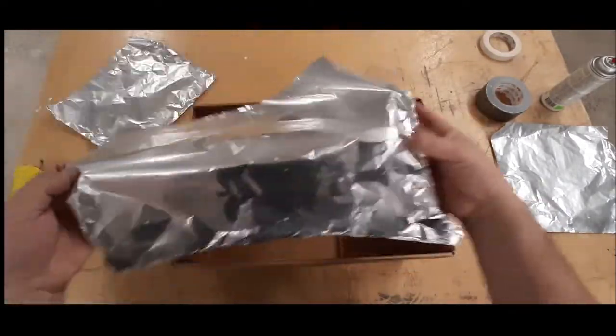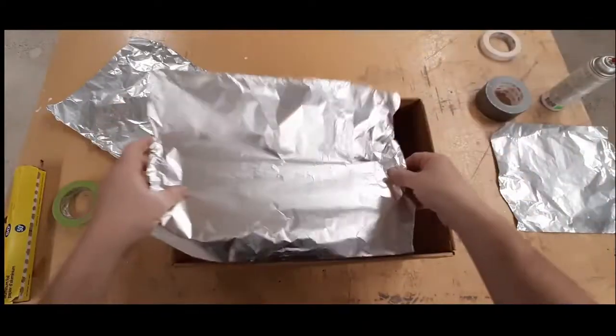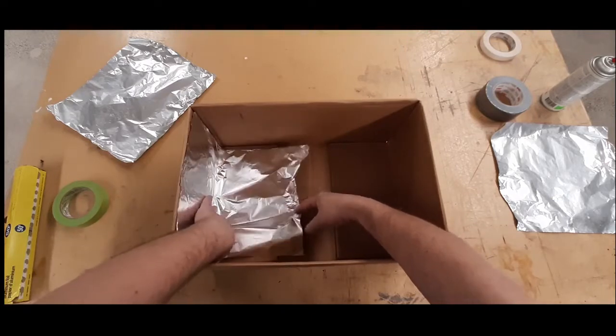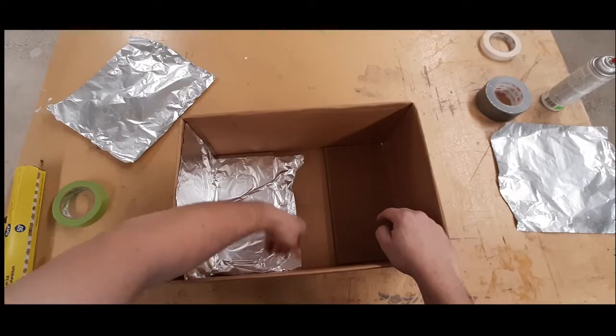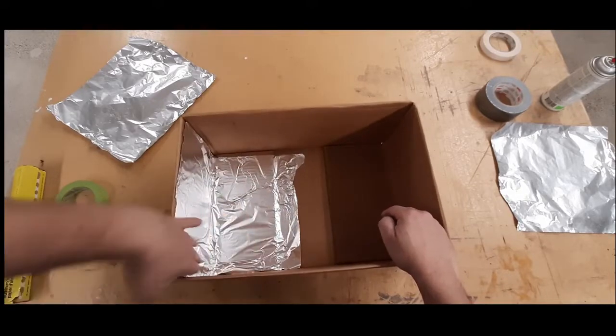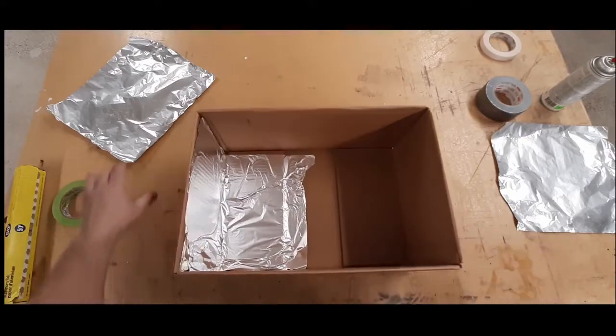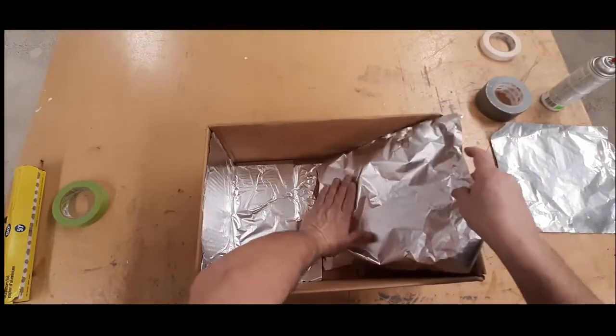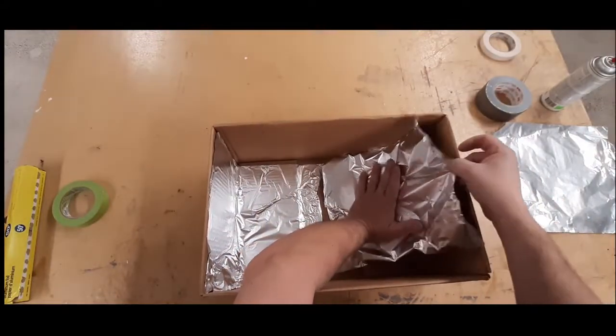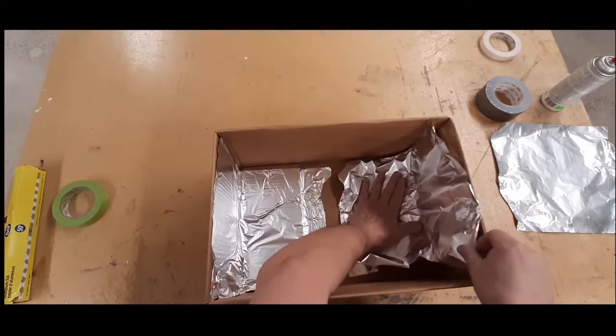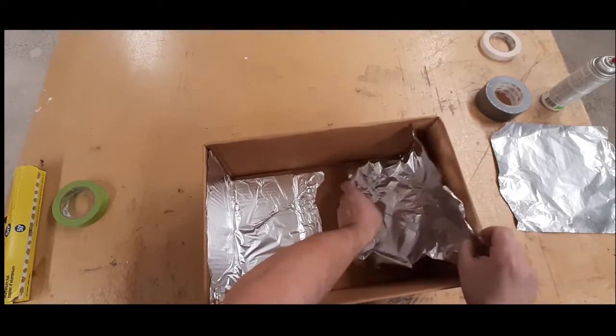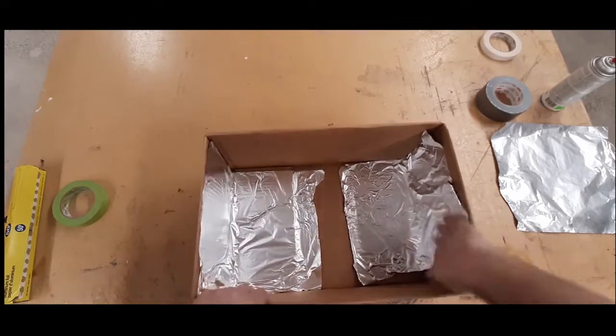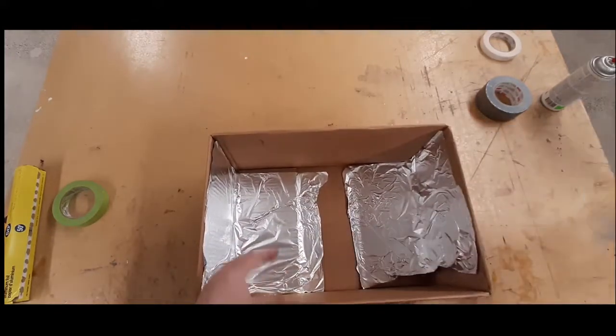Now that the glue is tacky, carefully start to line the inside of the box starting at one end. Having short foil pieces here will make this step go much easier. Don't worry if this starts to look a little messy. It won't matter. You just really want to get coverage on the inside of the box.